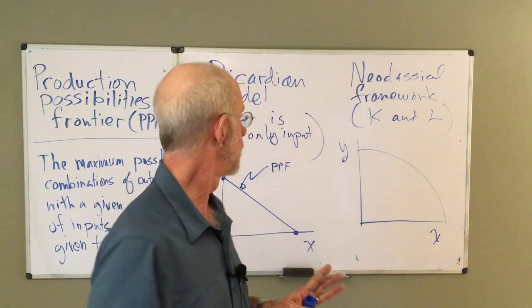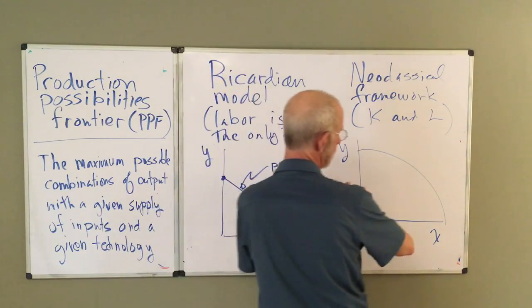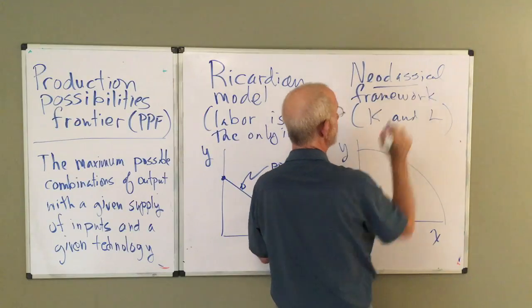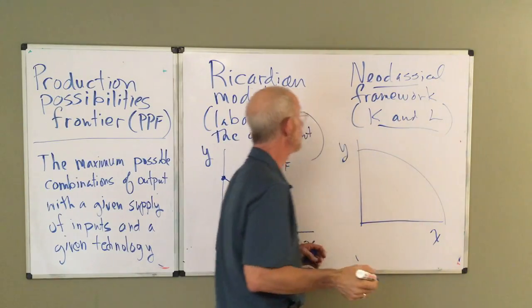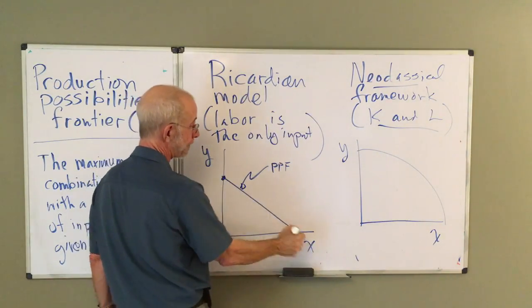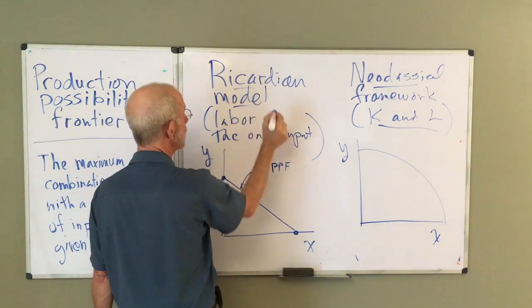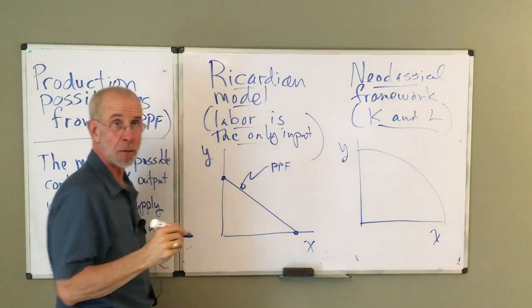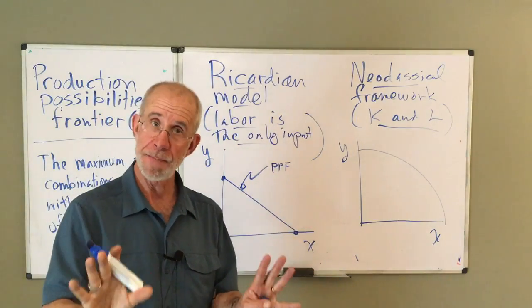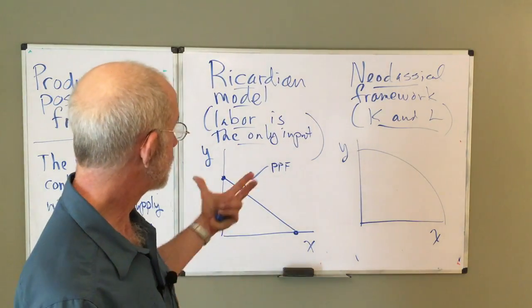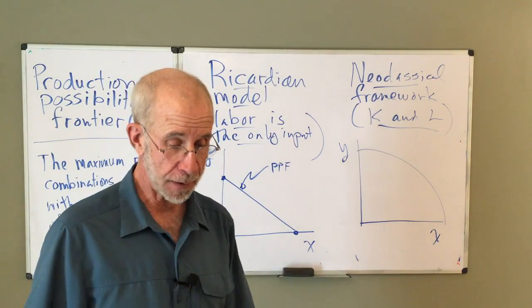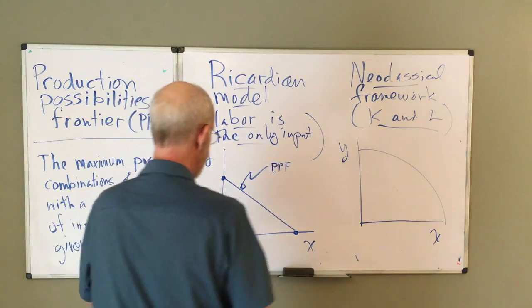So very general idea, a bowed out PPF means neoclassical, multiple inputs, a straight, a linear PPF, Ricardian model, labor is the only input. Okay? So keep that straight because you'll see these two in a couple of different contexts.